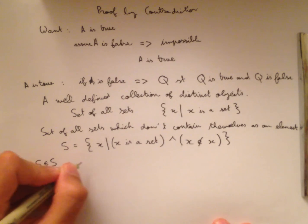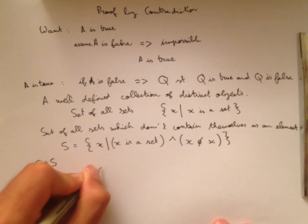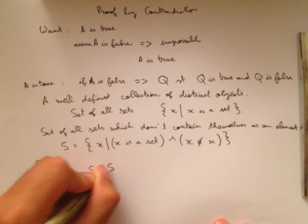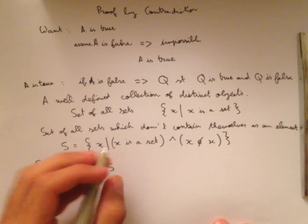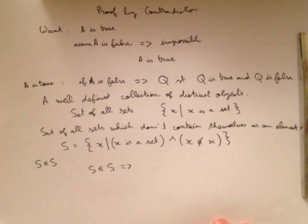So if we want to prove that it's false, or that S is not an element of S, well, we assume that S is an element of S and we see if we can derive a contradiction. Well, if S is an element of S, then S is a set. But S is an element of S, so it doesn't satisfy this condition that we set here.